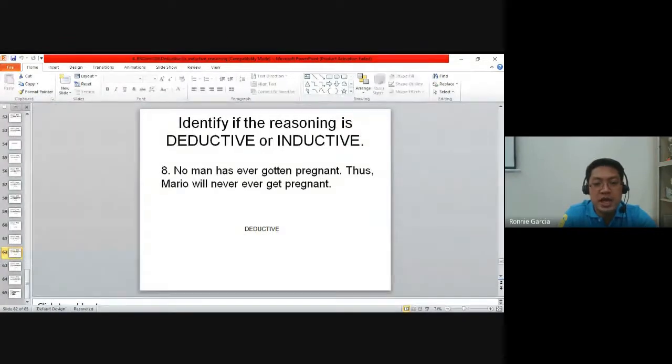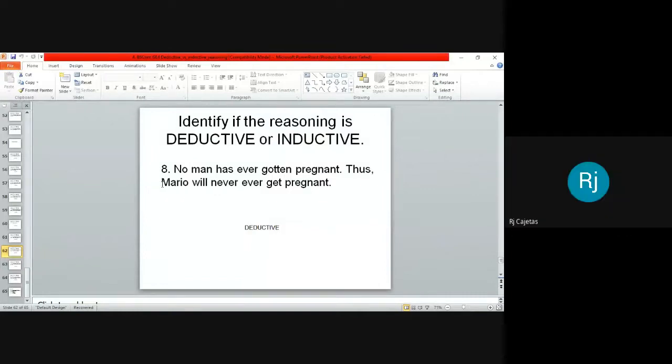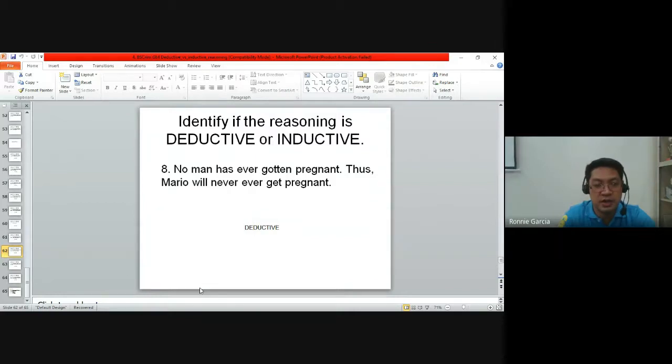Number eight: No man has ever gotten pregnant. It is a general statement that no man can get pregnant. Here comes Mario, so Mario will never ever get pregnant. From a general statement, even though we don't see the word 'all,' it presents a general idea then gives a specific example. General to specific - it's deductive.